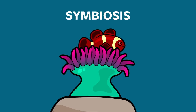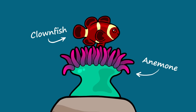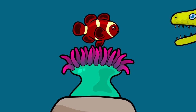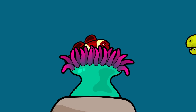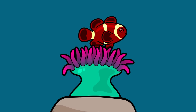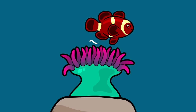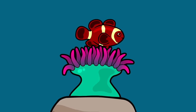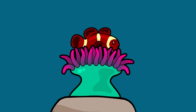Normally when people talk about symbiosis, they're talking about two different types of organisms cooperating to help each other survive. For example, clownfish hide from predators among the tentacles of sea anemones. In return, they feed the anemone with their own droppings. The anemone and the clownfish enjoy a symbiotic relationship.